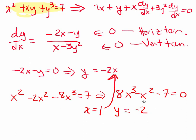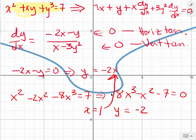Let's get the graph back here. Horizontal tangent, x equals 1, y equals negative 2. Yeah, that's right around where we expected to find it.